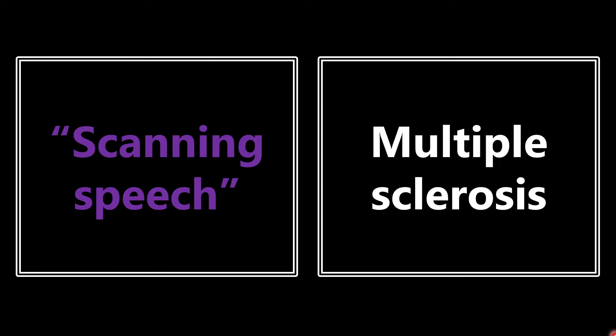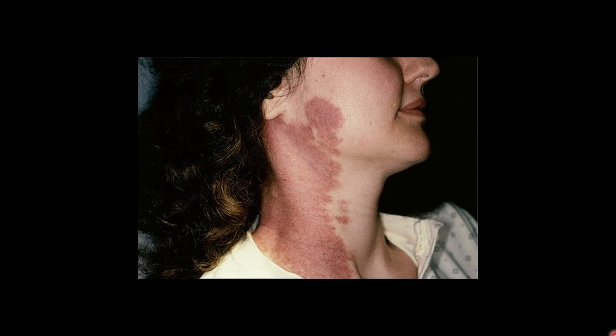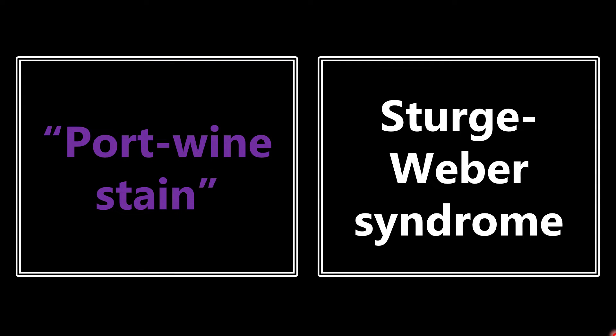A young female in her 30s or 40s is one of the common demographics for MS, so keep that in mind. Next, port wine stain — they may not give you this term straight up, but if they do, or if they show you a picture, think Sturge-Weber syndrome. You can see that port wine stain in the image, and the association is Sturge-Weber syndrome.